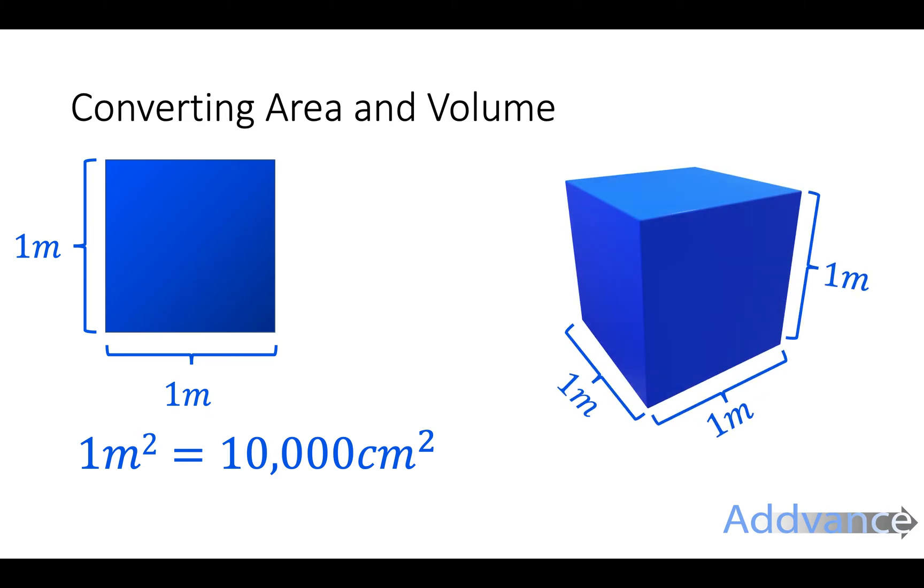Similarly for volume, this is a 1 meter by 1 meter by 1 meter cube, a 1 meter cubed of volume, which is 100 centimeters by 100 centimeters by 100 centimeters. We multiply 100 times 100 times 100 is 1,000,000 centimeters cubed. So 1 meter cubed is the same as 1,000,000 centimeters cubed.